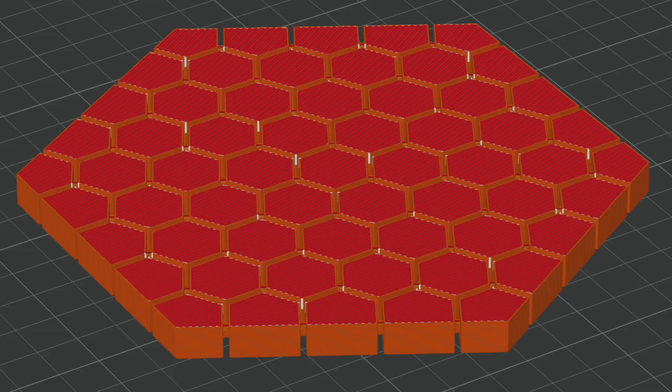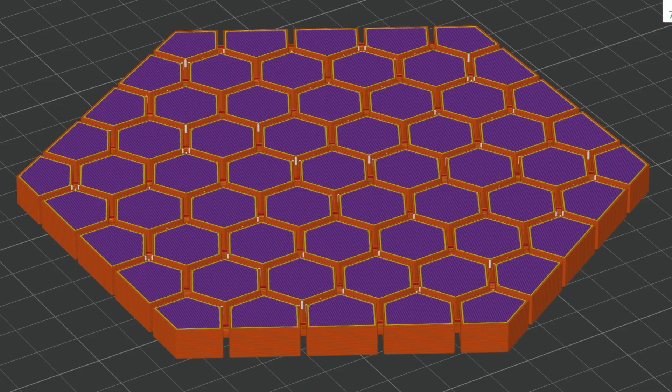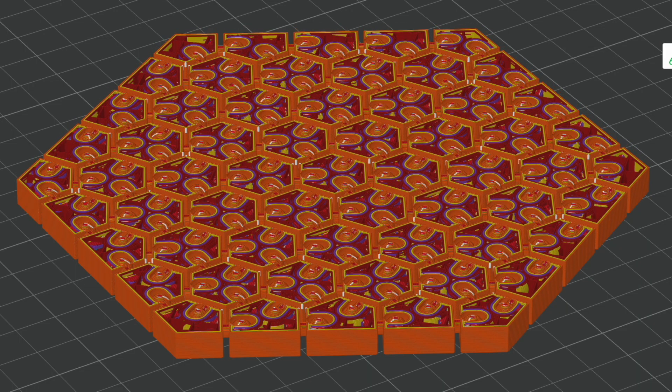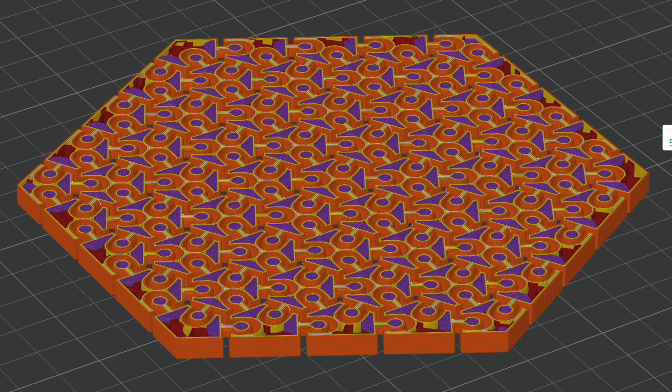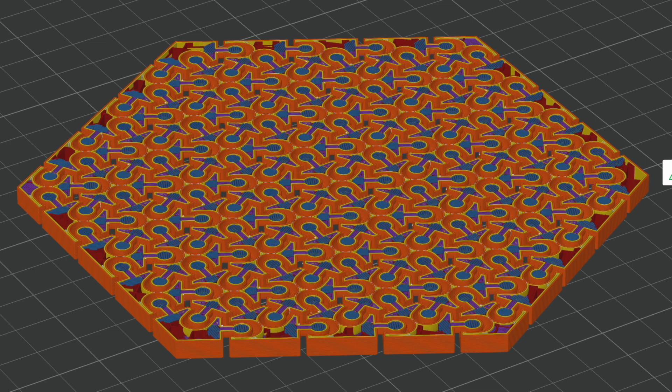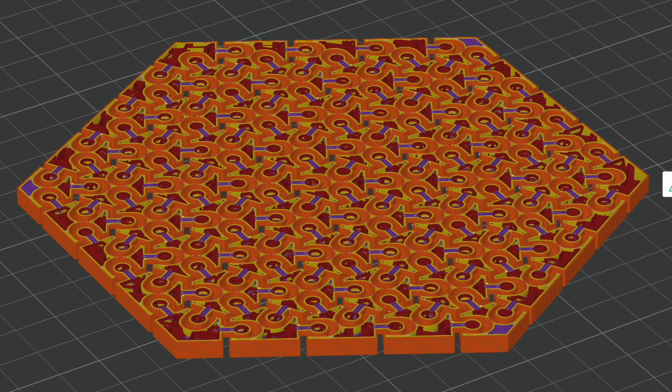They are made up of hexagons with six ball and socket joints on each side. They can be made out of most materials that can be 3D printed. They require no support.